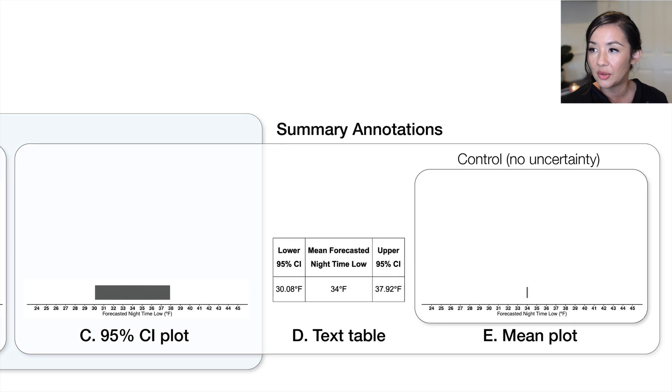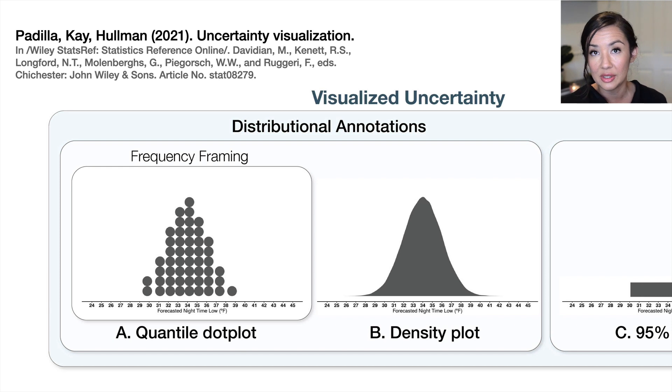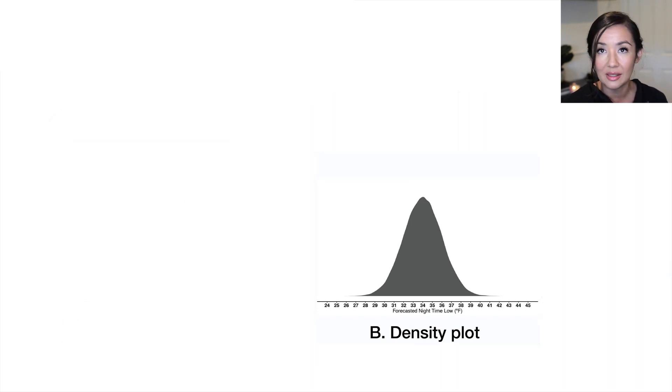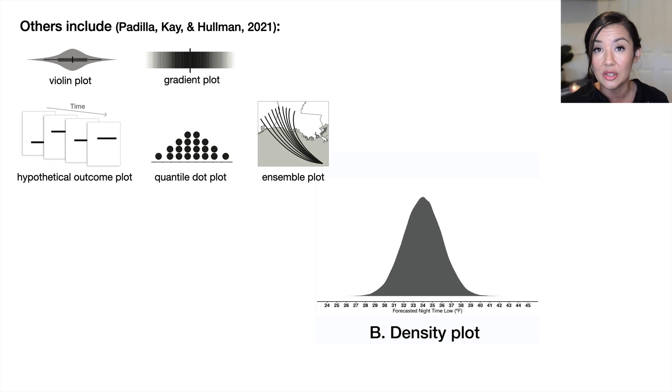These three together create a class of summary annotations, where you have continuous probabilistic data and you summarize over that space in some way. The other big category is distributional annotations that convey more of the full distribution of information. Focusing here on the first one, which is a density plot, what we wanted to do is determine if we're really showing more of the spread, if that is useful, or maybe it's more effort to understand because there's really just more information going on here. This density plot is just one of many different types of probabilistic annotations that we could have used. We specifically selected the density plot because it's received so much empirical evaluation, and it tends to do fairly well when compared against other visualization techniques.